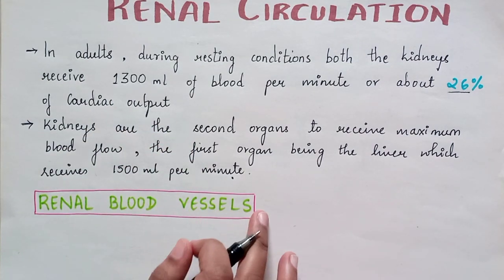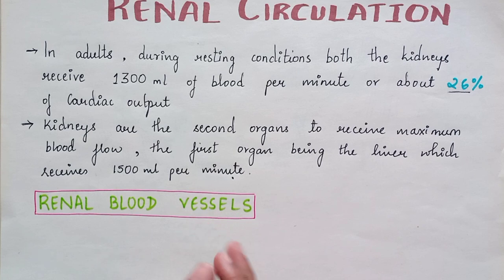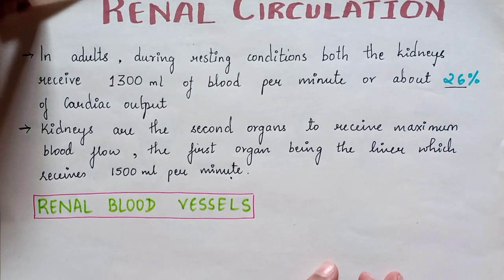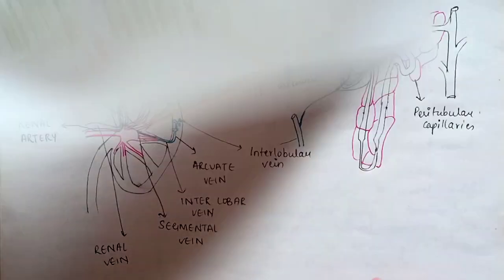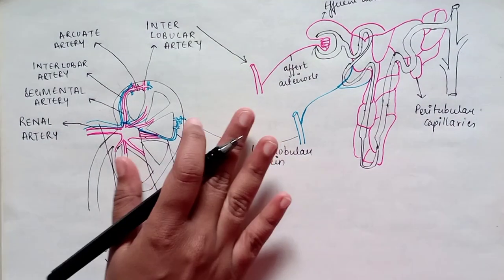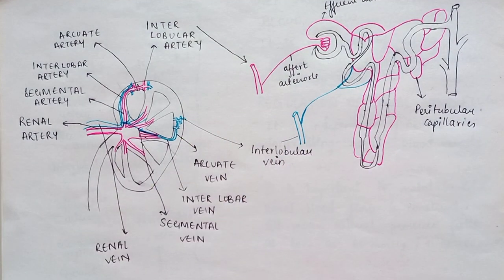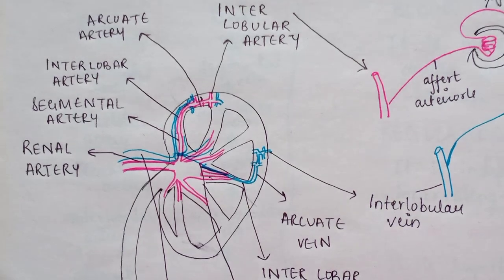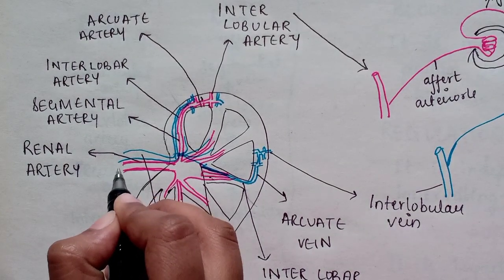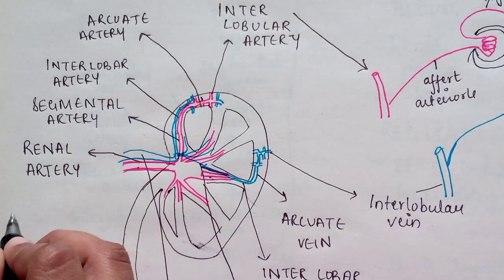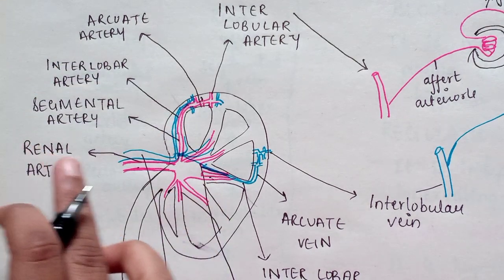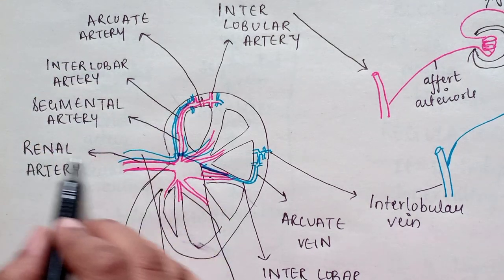Let's understand renal blood vessels — how these blood vessels are situated in our kidney. To understand renal circulation in more detail, this is how these are placed. In the diagram, the red markings are of the artery and the blue of the vein.